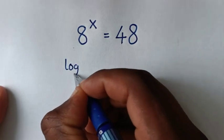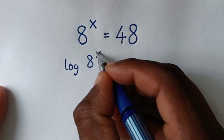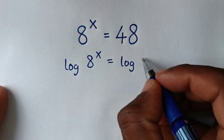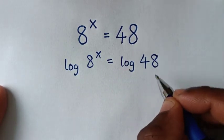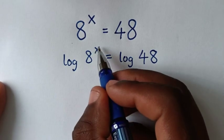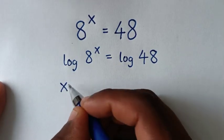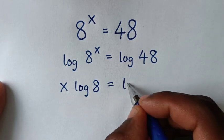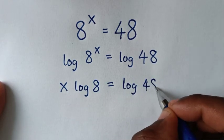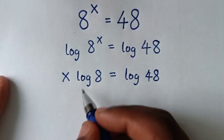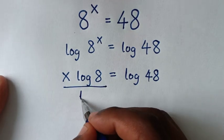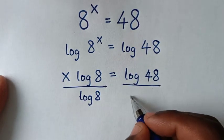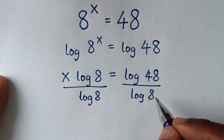So it will be log of 8 power x is equal to log of 48. Then this power of x will move to the front, so it will be x times log of 8 is equal to log of 48. Then we'll divide by log of 8 on both sides.